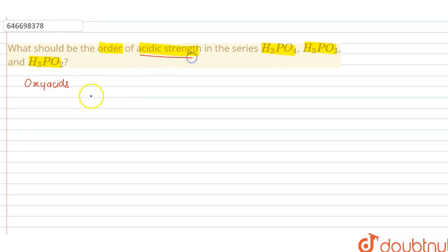For oxo acids, generally the acidic strength is directly proportional to the oxidation number of the central atom.